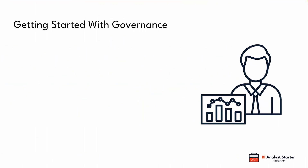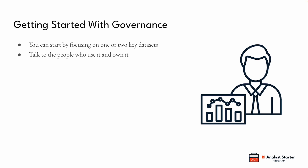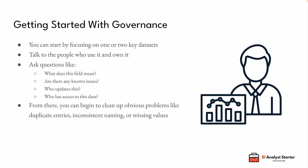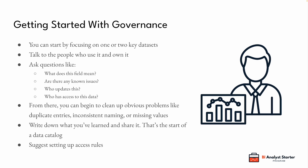If the company you work for has no formal governance in place, you can still make a real difference. Start by focusing on one or two key data sets — something important like customer data or sales transactions. Talk to the people who use it and the people who own it. Ask questions like: what does this field mean? Are there any known issues? Who updates this? From there, begin to clean up obvious problems like duplicate entries, inconsistent naming, or missing values. Then write down what you've learned and share it — even a shared Google Doc or internal wiki page is the start of a data catalogue. If you can, suggest setting up access rules: who needs edit access, who needs only to view, and who maybe shouldn't have access at all. These small steps can help build a culture of accountability.